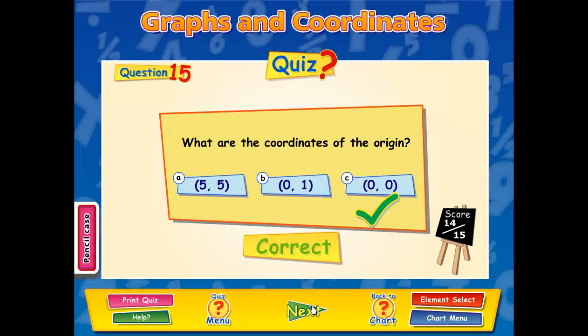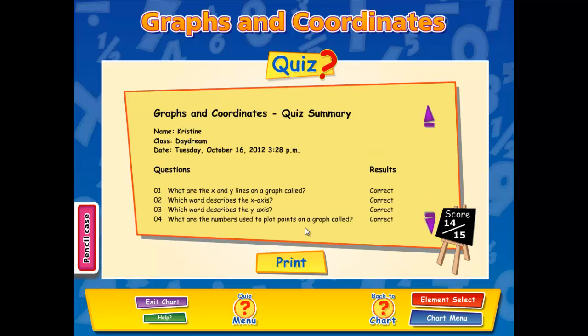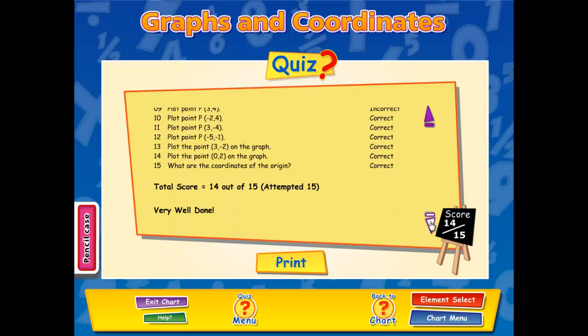Once you reach the end of the quiz, you can enter the name and class and then view the summary. The summary screen visualizes your results and highlights any common errors. Again, another great self-assessment tool for the students. The results can then be printed out and handed to the teacher.